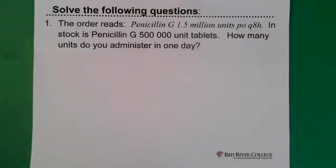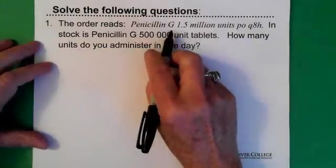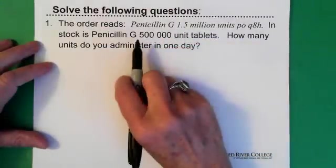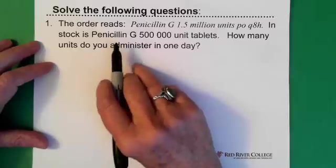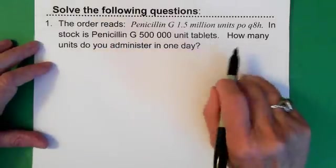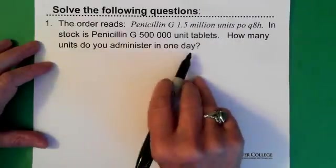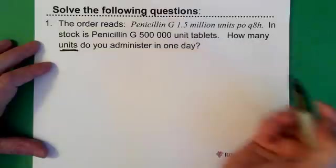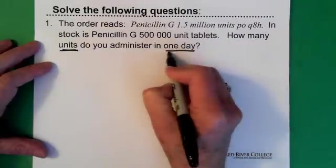So, first question. The order reads penicillin G, 1.5 million units by mouth every 8 hours. In stock is penicillin G 500,000 unit tablets. The question asks, how many units do you administer in one day? So, this is what the question is asking for, the number of units in one day.